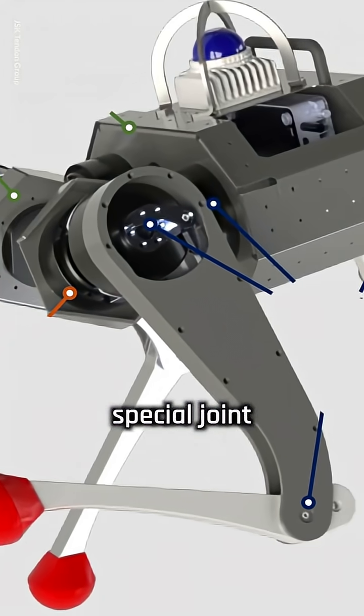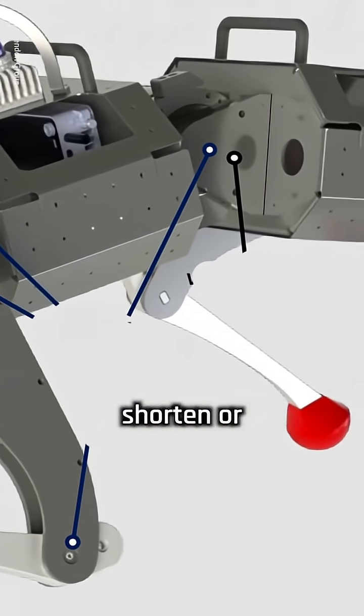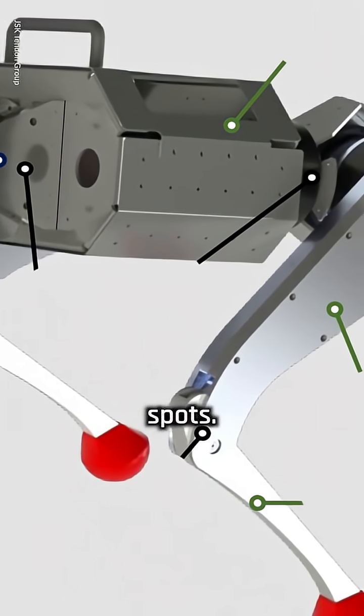The robot also has a special joint in its waist, allowing it to shorten or bend its body to fit tight spots.